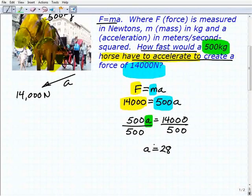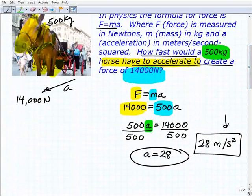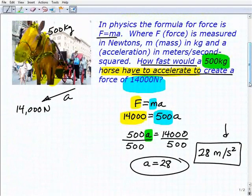But 28 what? Well, 28 represents acceleration. You always want to use the proper units of measure, 28 meters per second squared. When you're solving a word problem that has units of measure involved, whether it's Newtons, inches, feet, miles per hour, always make sure you add in the proper unit of measure. This horse is going to have to go 28 meters per second squared to reach a force of 14,000 Newtons.